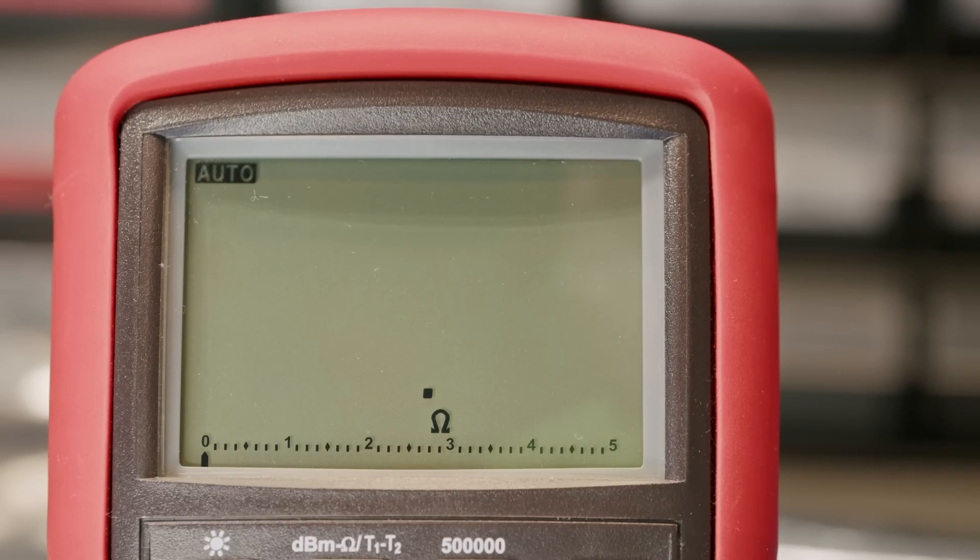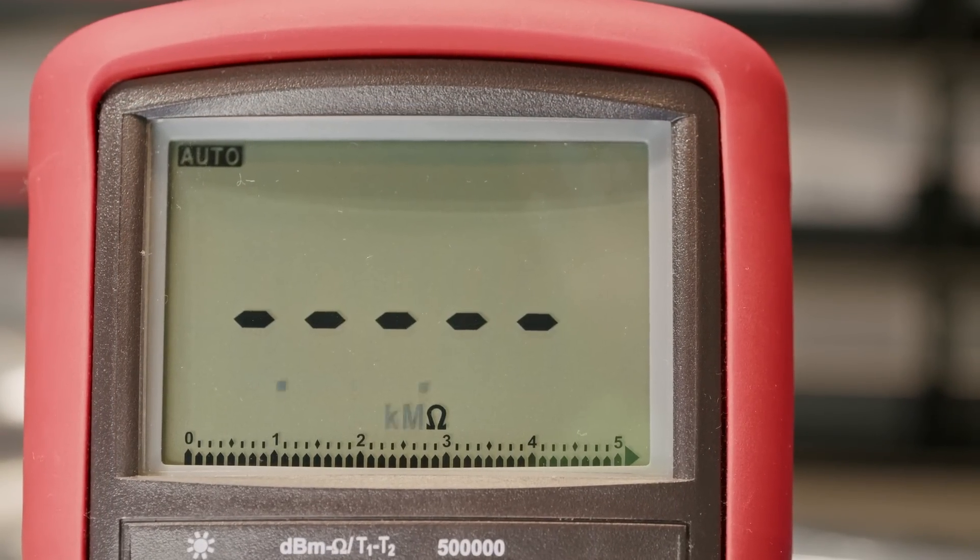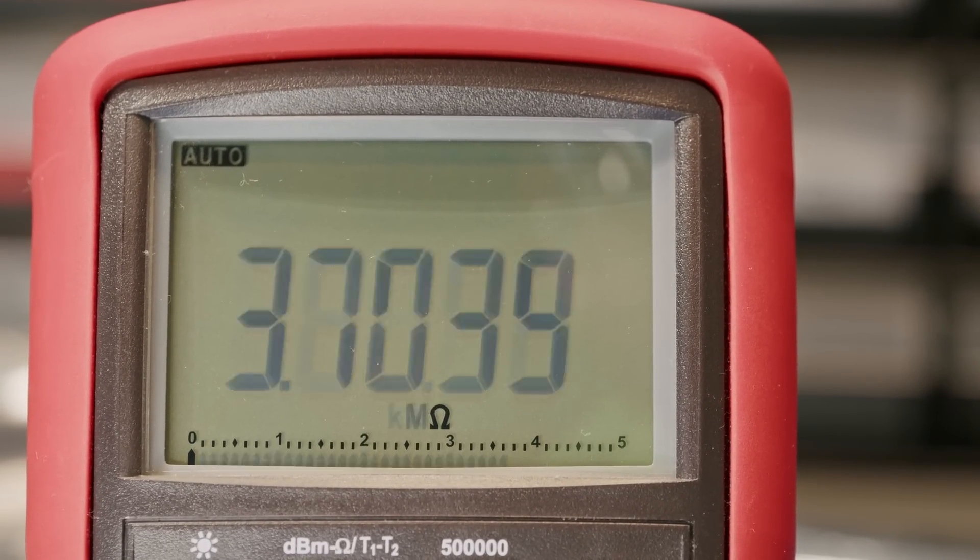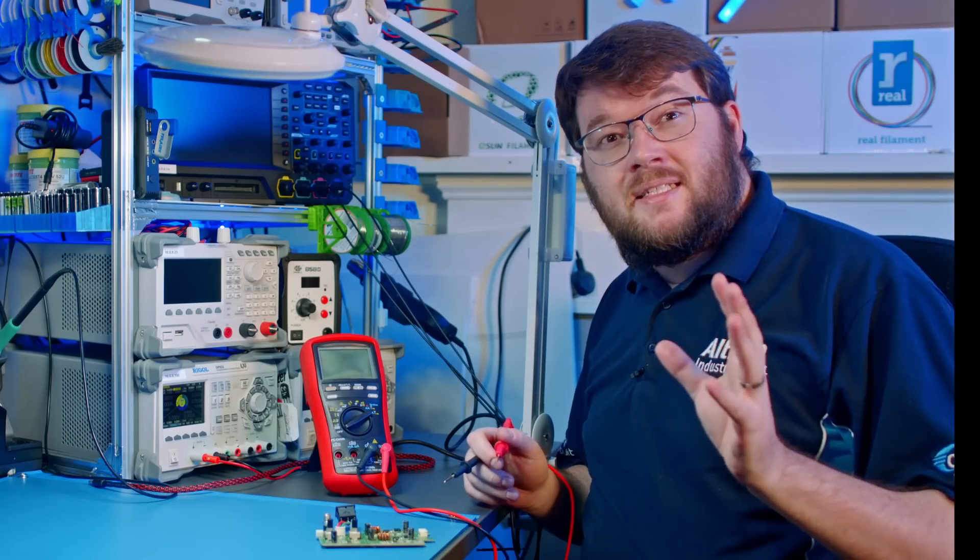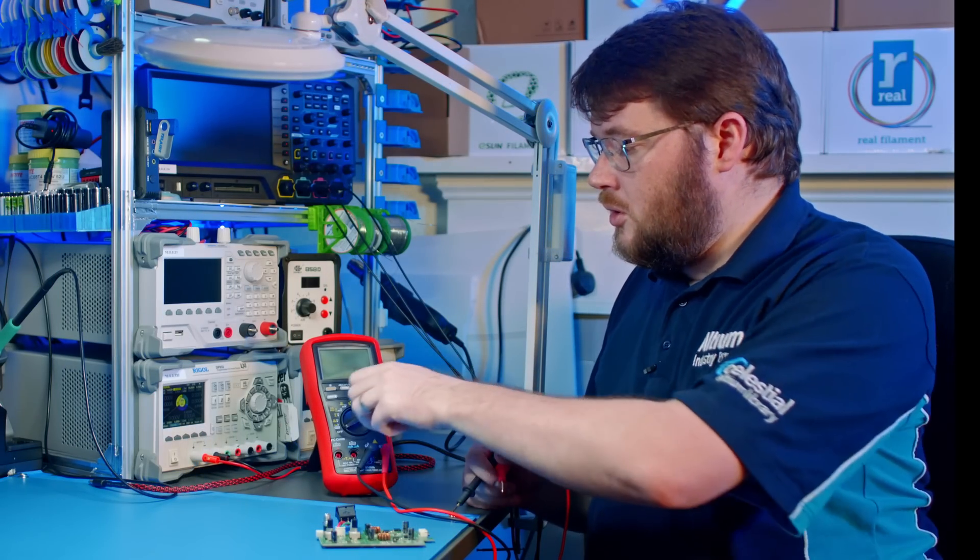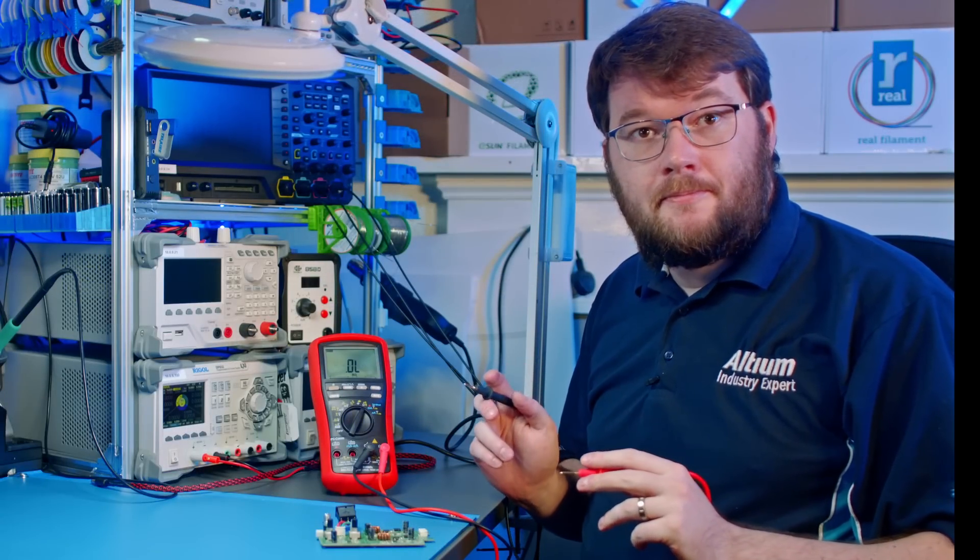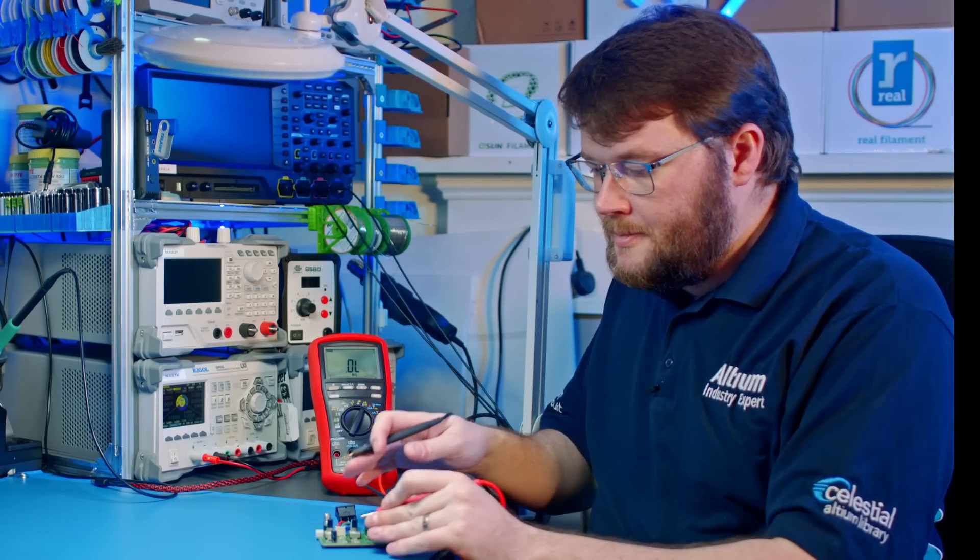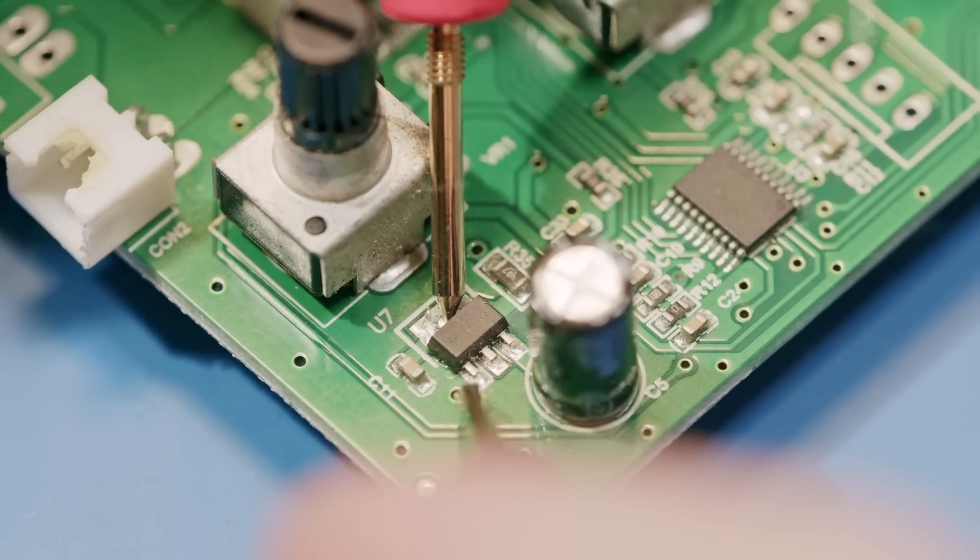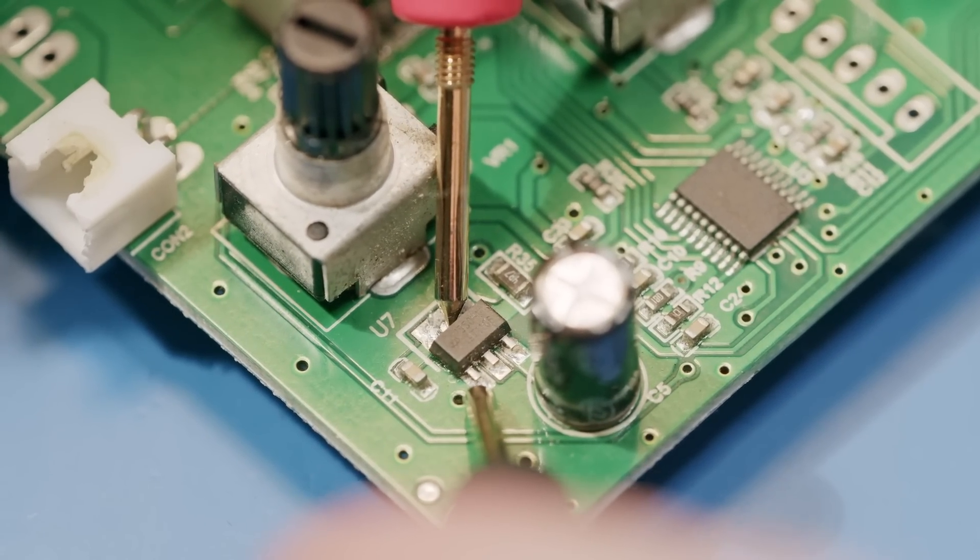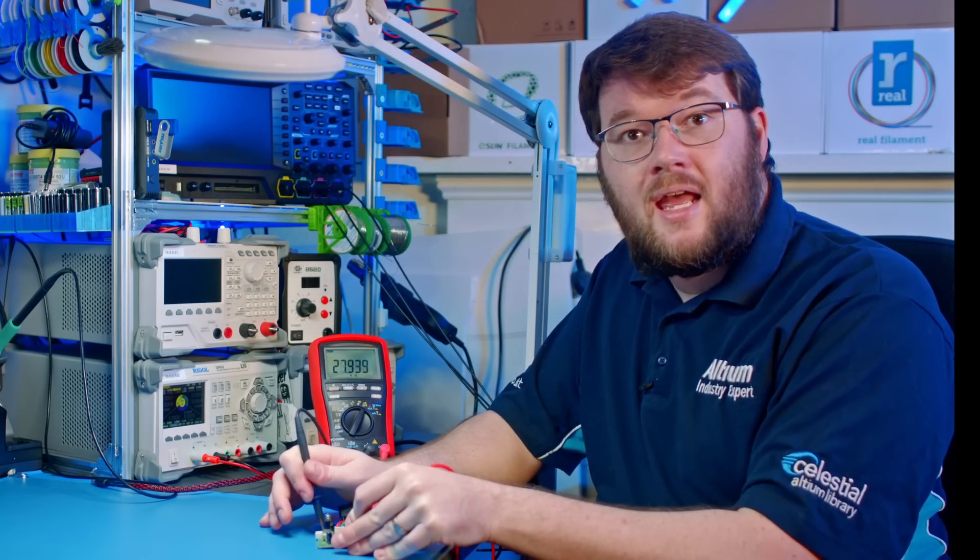You should expect to measure near zero resistance between points on the same net. You should expect to read high or infinite resistance if you measure between power rails or different nets. Start by setting your multimeter to the resistance or ohms measurement mode. Then, with your multimeter set up, touch the positive lead to one of the power rails and the negative lead to ground. The reading you get will indicate the resistance between the power rail and ground.